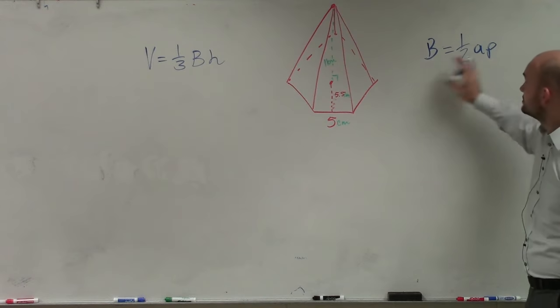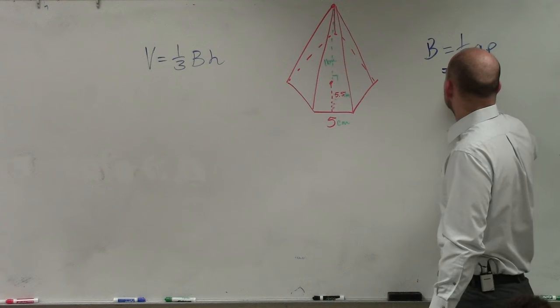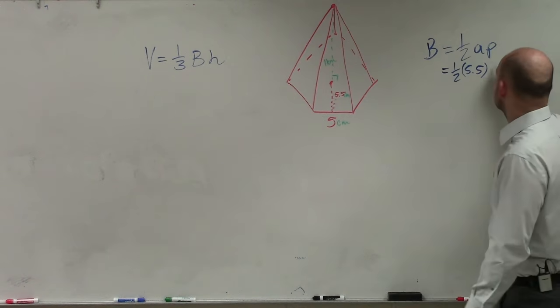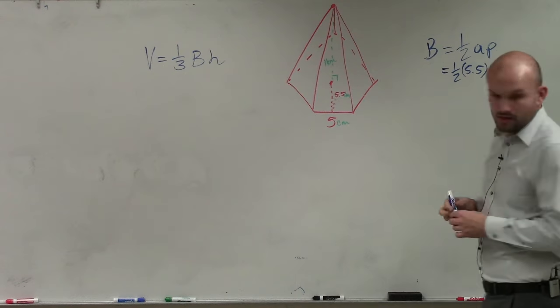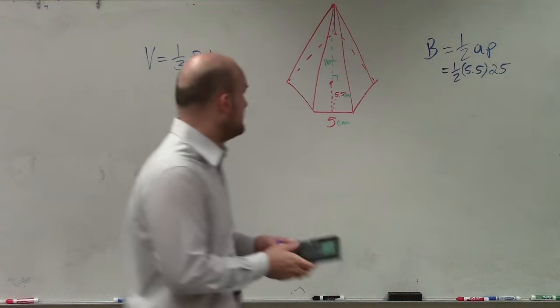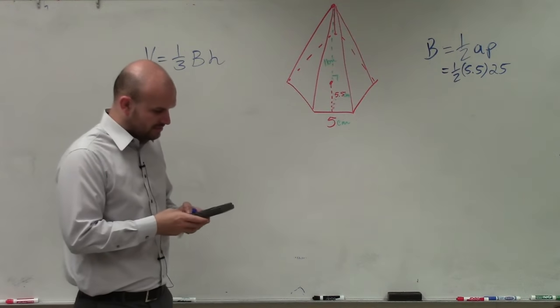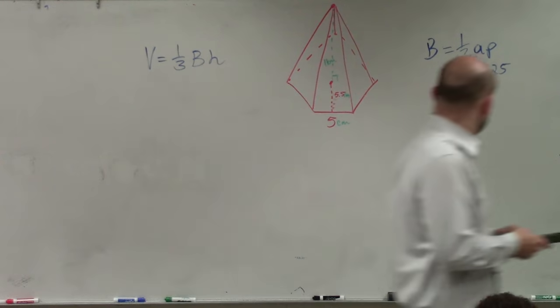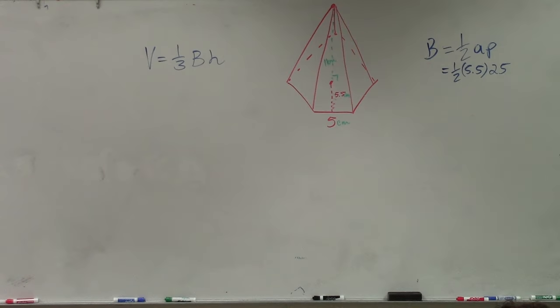So now we go and look at this. If I want to find area of this, I'm just going ahead and type 1/2 times 5.5 times P, which is the perimeter, 5 times 5 is 25. So I'll go ahead and type that into my calculator, and that's going to be the area of the base. So 5.5 times 25 times 0.5.